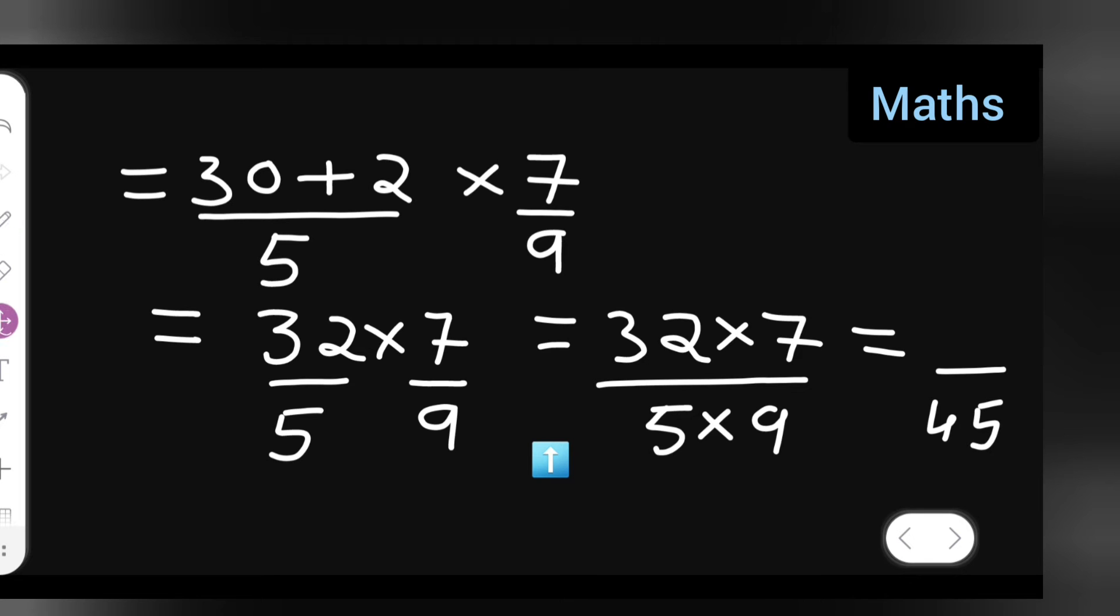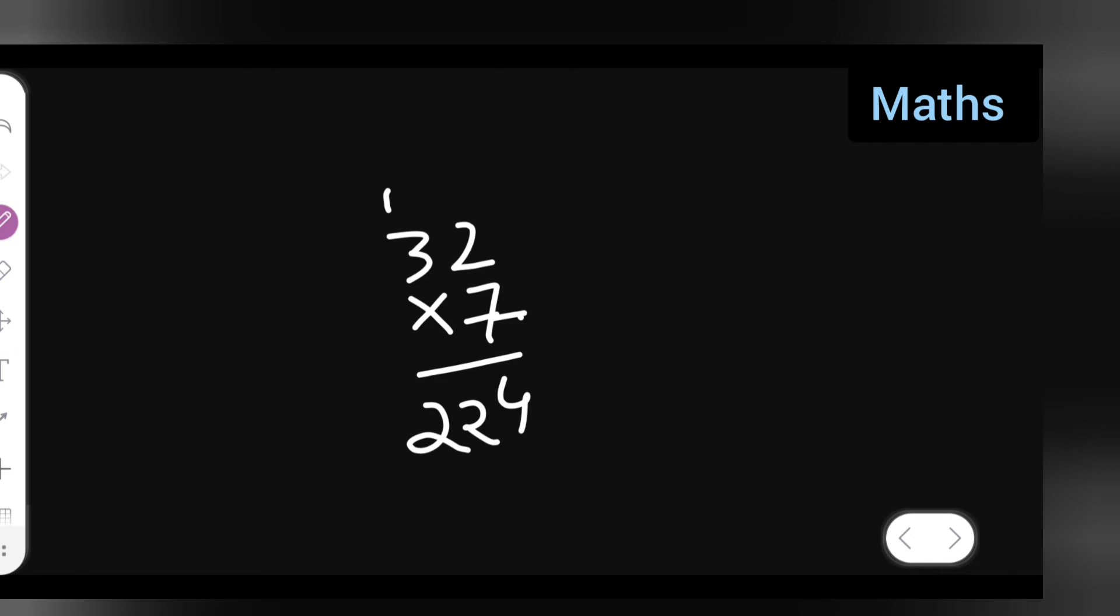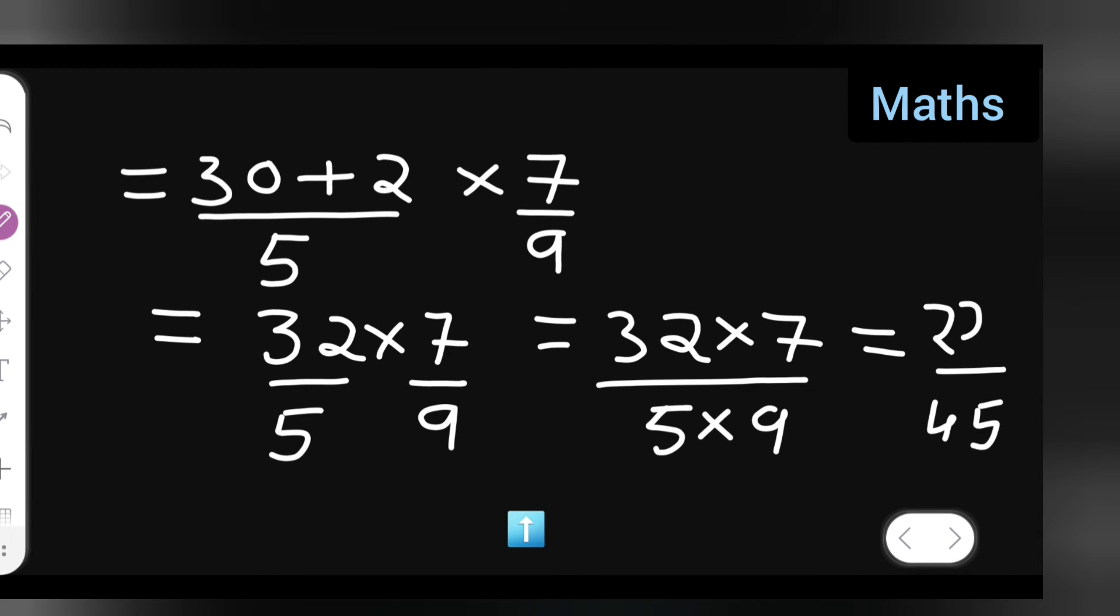Now multiply this: 5 nines are 45. And now multiply this 32 multiplied by 7. 7 twos are 14, 7 threes are 21 plus 1 is 22. So 224. So the answer is 224 upon 45.